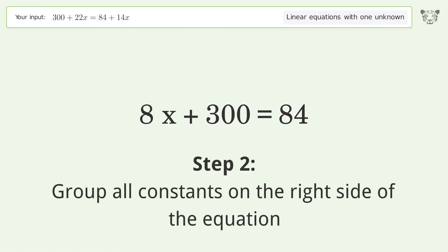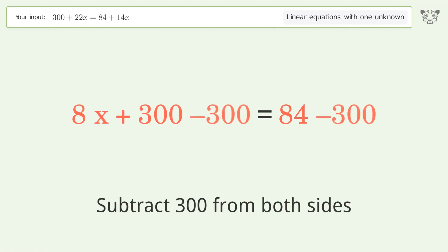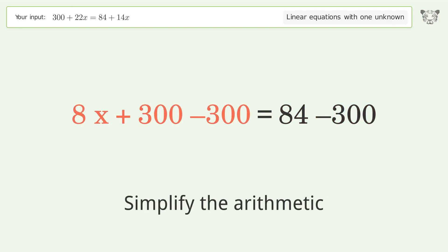Group all constants on the right side of the equation. Subtract 300 from both sides. Simplify the arithmetic.